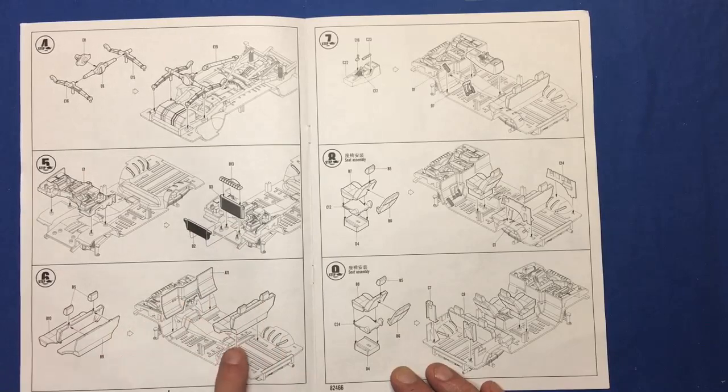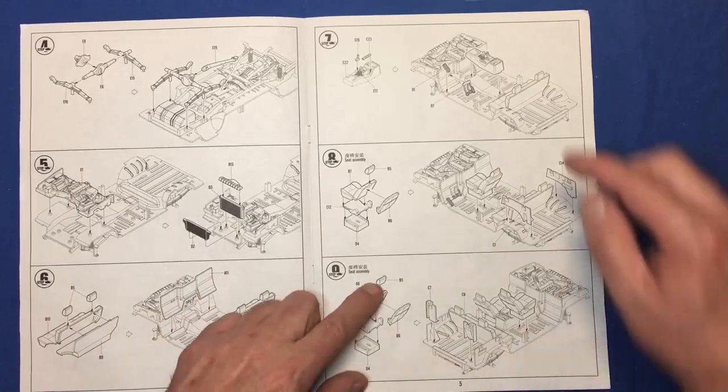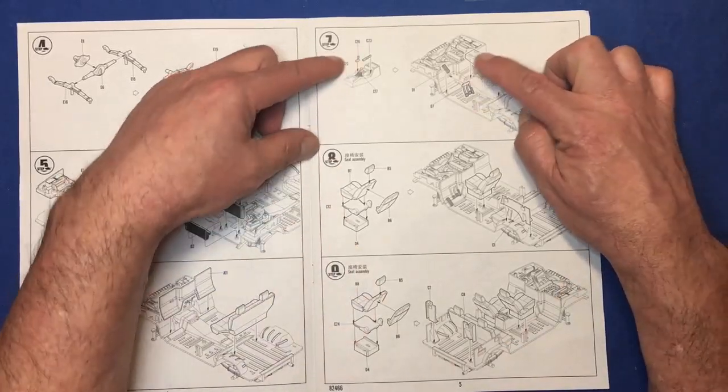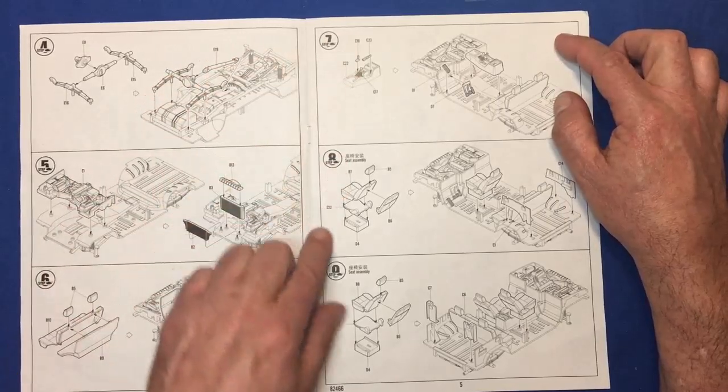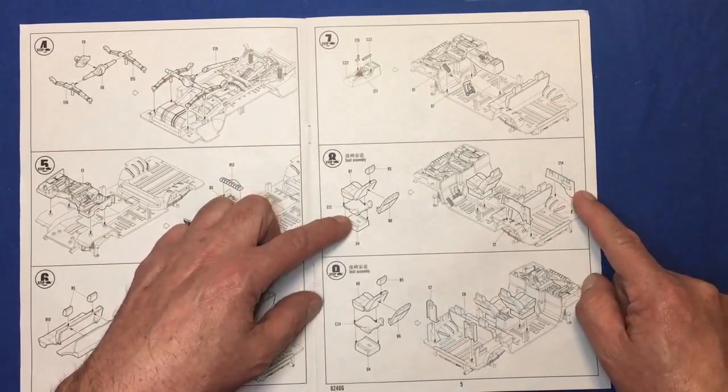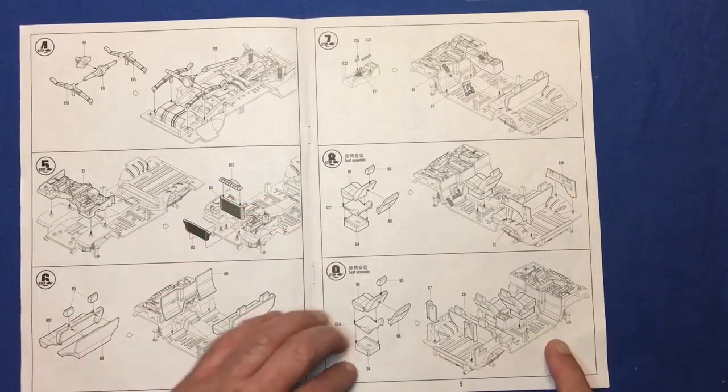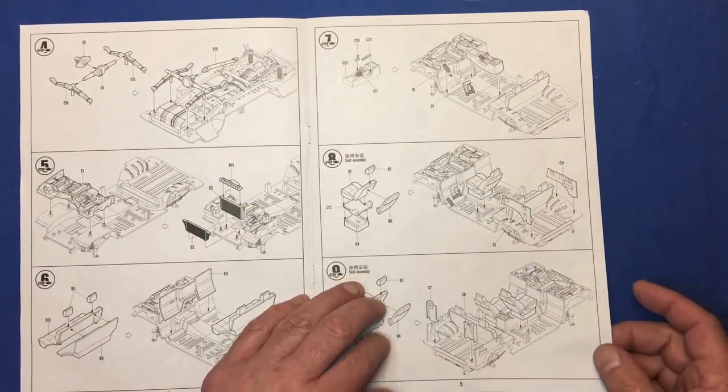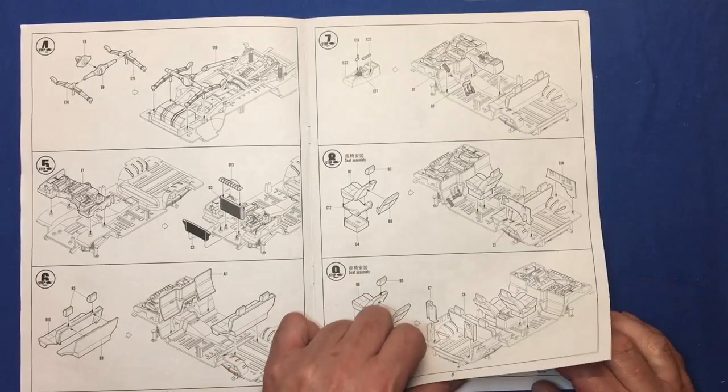Straight onto the interior, putting in the bulkhead and the rear seats. Center console pedals, accelerator pedal, gear stick, handbrake. And then onto the front seats and the rear side panels. So it's got some nice interior detail there. I guess with the option with the roof being open, it needs to be fairly detailed.